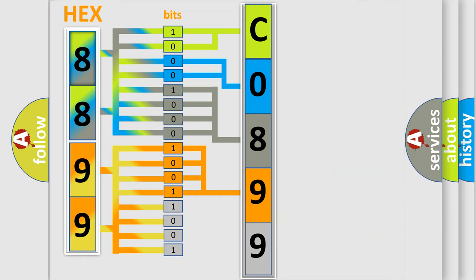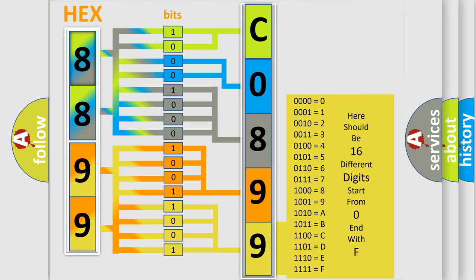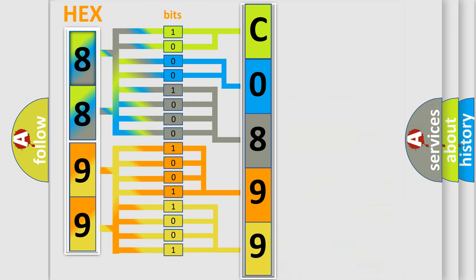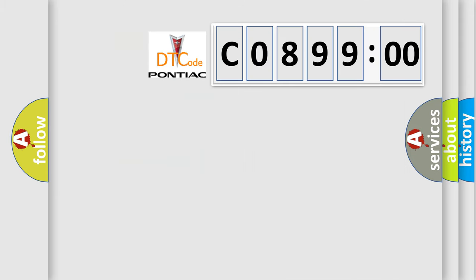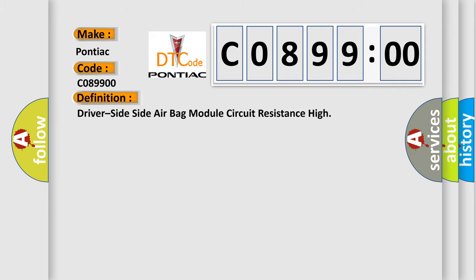A single byte conceals 256 possible combinations. We now know in what way the diagnostic tool translates the received information into a more comprehensible format. The number itself does not make sense to us if we cannot assign information about what it actually expresses. So, what does the diagnostic trouble code C089900 interpret specifically for Pontiac car manufacturers? The basic definition is: driver side airbag module circuit resistance high.